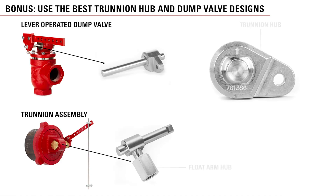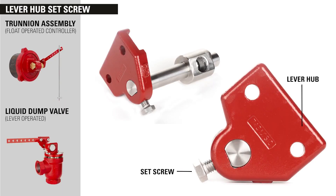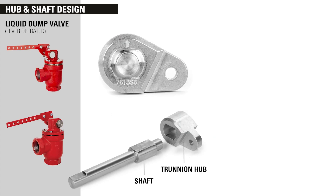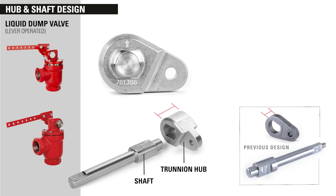There are three new key features which maximize performance in products used for interface control. There are now lever hub set screws in both the trunnion assembly and the lever operated liquid dump valve, which eliminates rotational play at these connections. The trunnion assembly now has a threaded design on the float arm hub, which yields no rotational play to that connection to the shaft. The trunnion hub and shaft designs have been updated in the lever operated dump valve — a new shape, thicker hub cross section, and tight tolerance precision manufacturing has minimized rotational play in this connection.